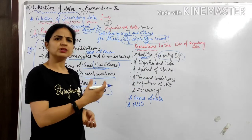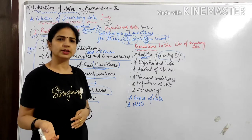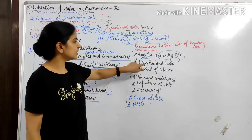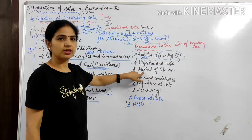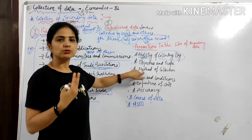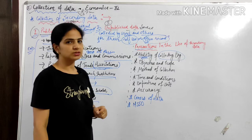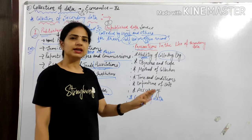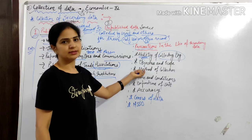For example, if there is a minor accident and social media publishes information about it, they will exaggerate it because their objective is to increase their ratings. But as a normal public observer, your objective is different. So the level of information will also differ. Objective and scope — whether theirs matches ours — must also be kept in mind. Then, methods of collection: in primary data we had four methods — direct investigation, indirect oral, questionnaire method, etc. Different methods have different merits and demerits, so you should check what method was used.